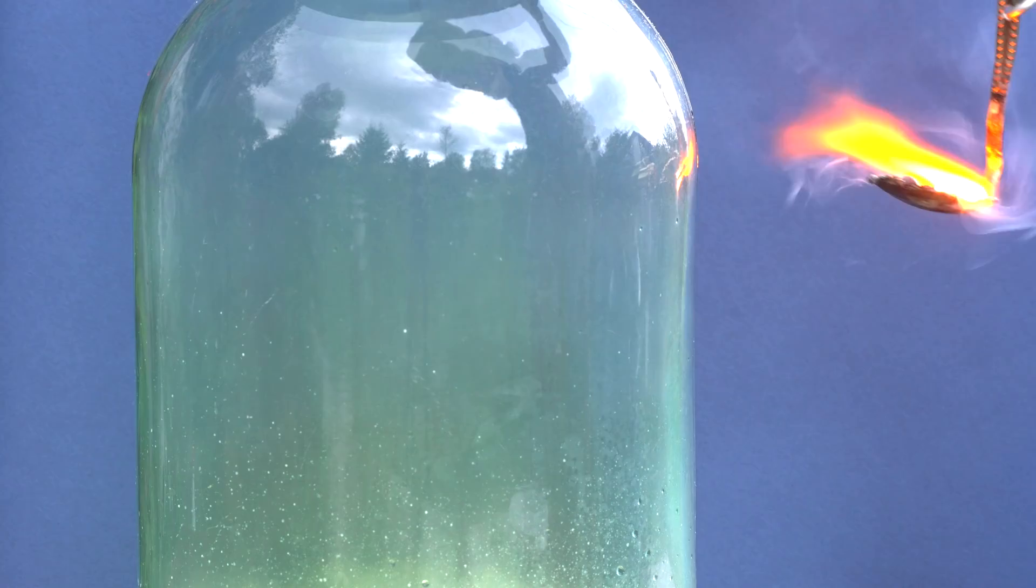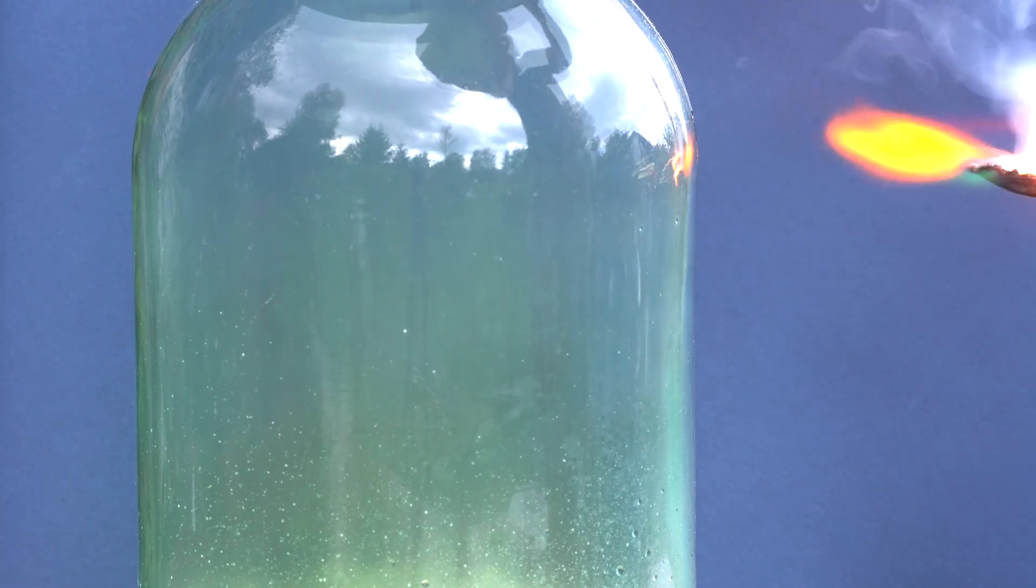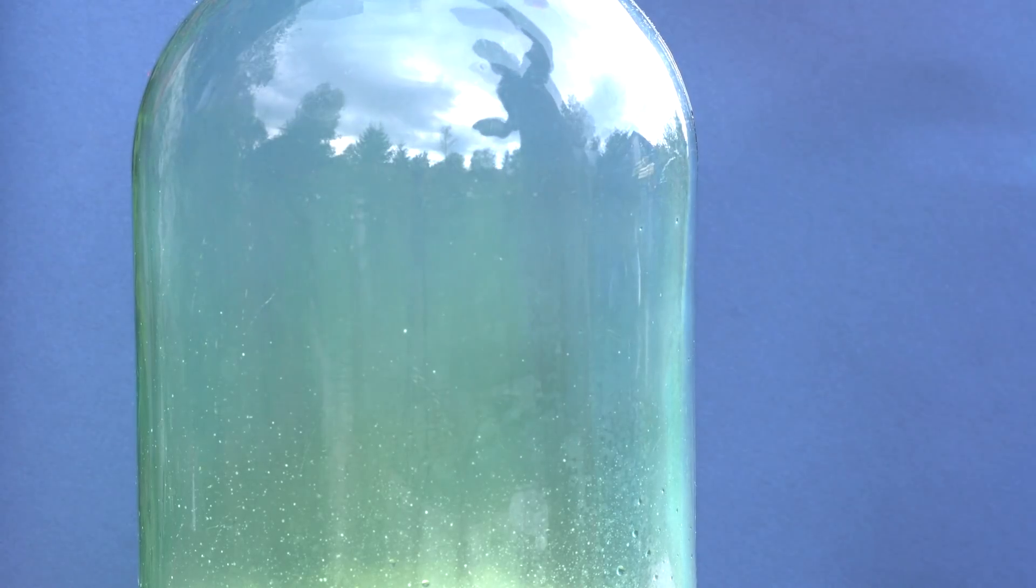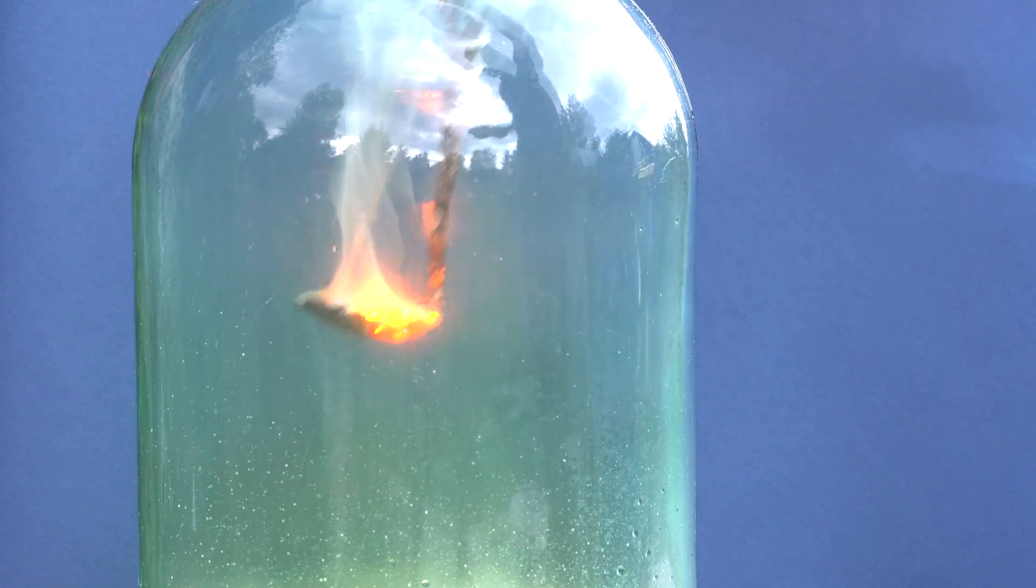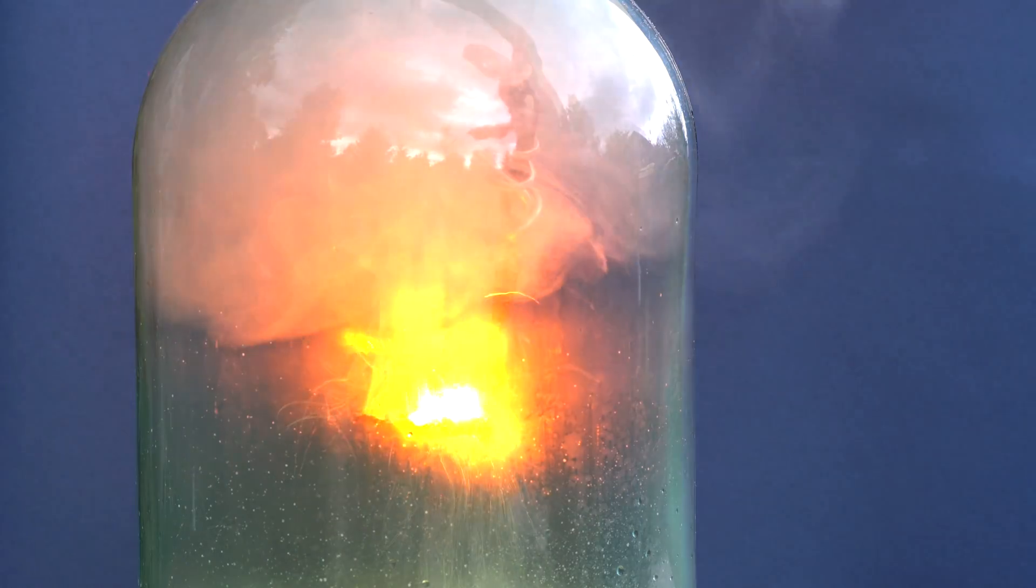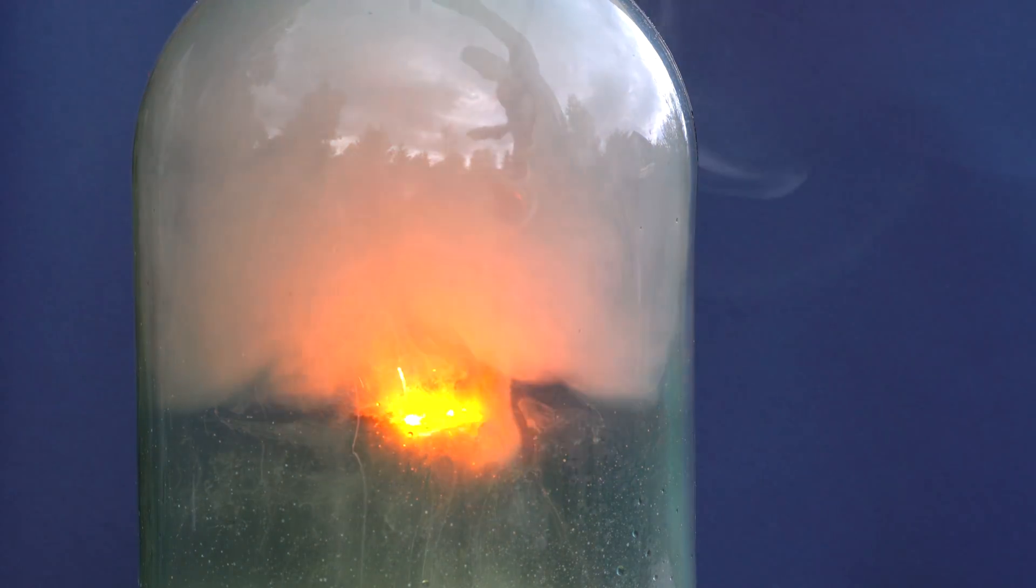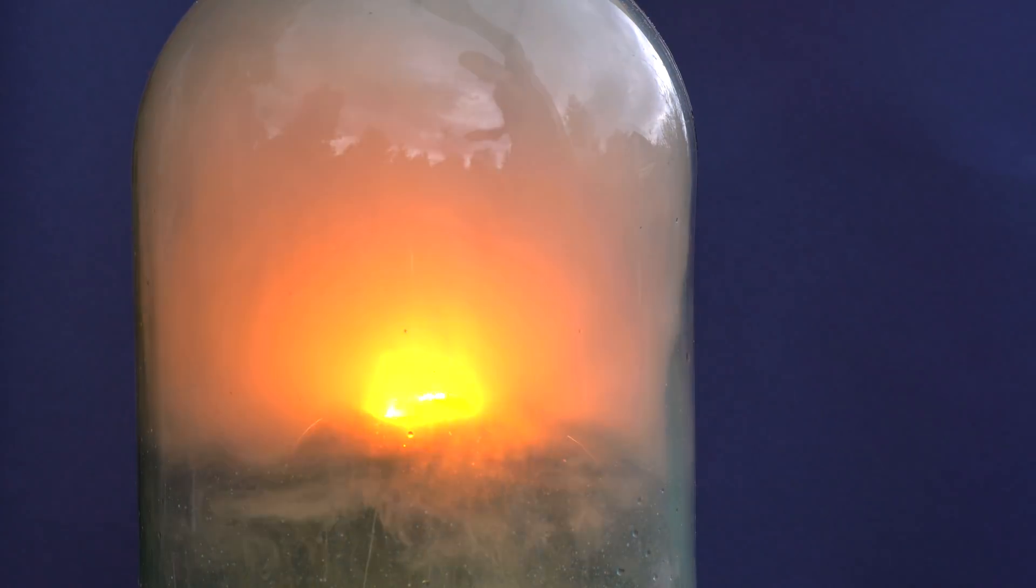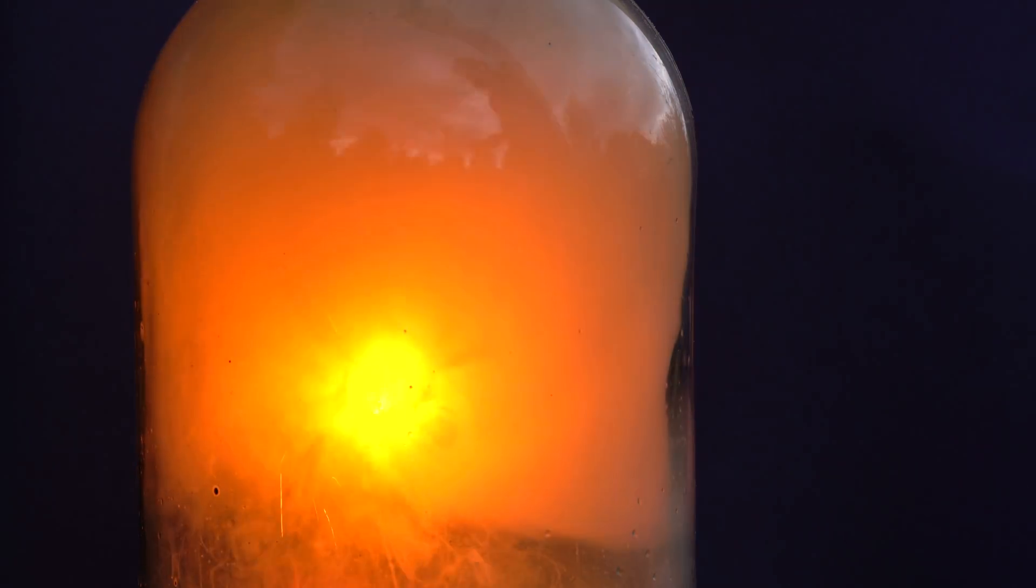I heated lithium with a burner so that it could melt and catch fire, after which I lowered it into the flask with the chlorine atmosphere. It is immediately evident that in the flask with chlorine, lithium burns much brighter and faster, forming smoke of lithium chloride.